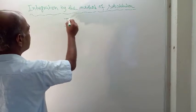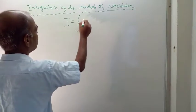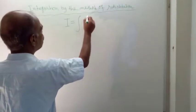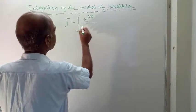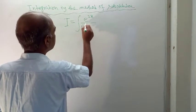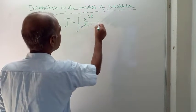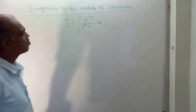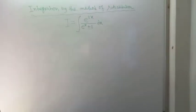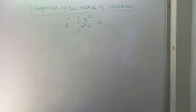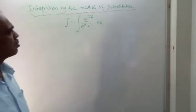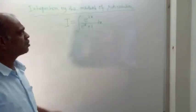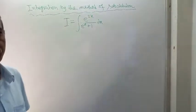The problem is the integration of e to the power 2x — e means the small e, exponential — e to the power 2x divided by e to the power x plus 1, dx. This is the given problem. Since the chapter is method of substitution, you know that some substitution has to be used.